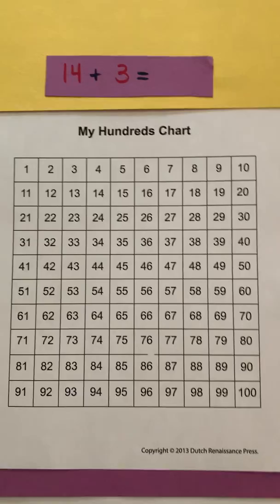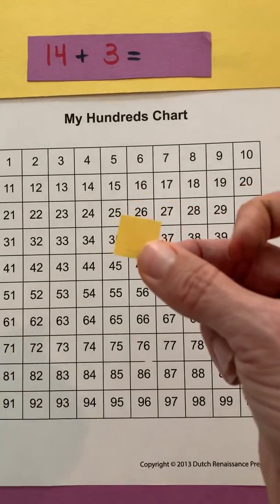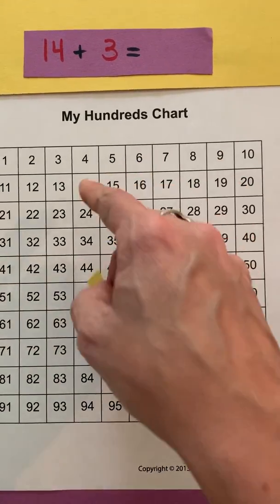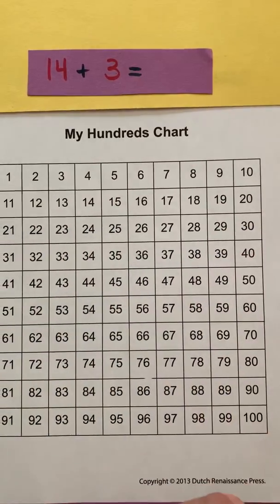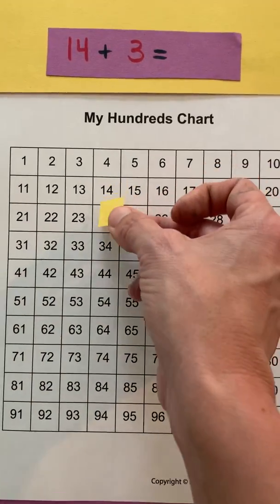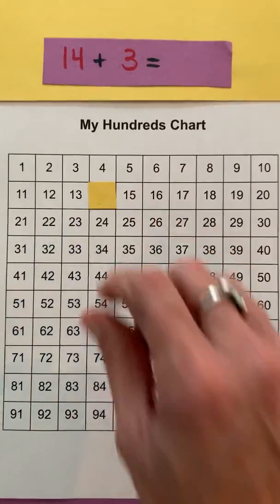So let's just say we're at 14 plus 3. So I'm going to, I just cut out a little marker. You can definitely use a goldfish, anything, a coin to kind of help you with this, but I'm going to take this. I'm going to put it at 14. Okay. Cause that's my largest addend.